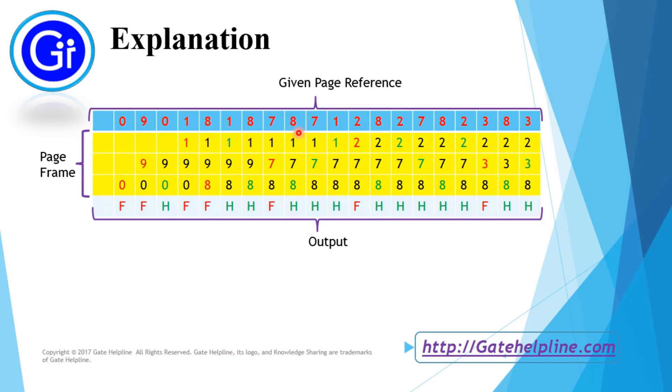Since 0 is not been used in the future, so 8 will replace 0. Similarly we will check for the next page references and replace them as per their future occurrences. So 7 will replace 9, 2 will replace 1, and 3 will replace 7.